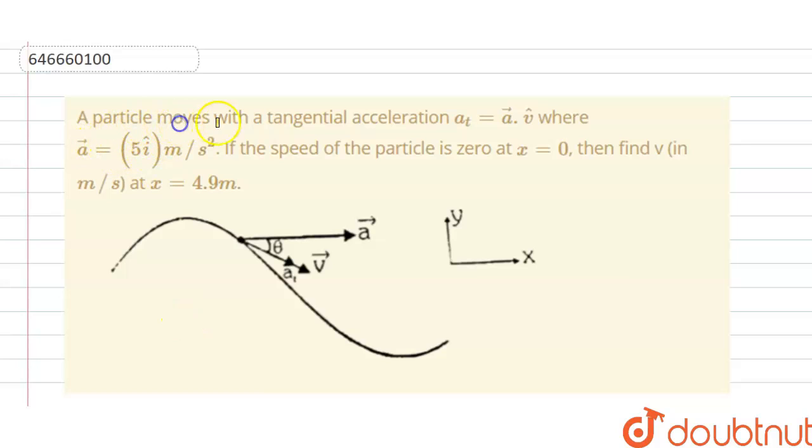We have a particle moving with tangential acceleration rate as the dot product a⃗·v⃗ where a⃗ = 5î m/s², and the speed of the particle is 0 at x = 0. Then we have to find the velocity in meters per second at x = 4.9 meters.